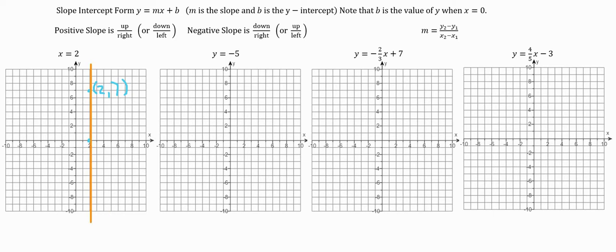And then for y equals negative 5, we go to where y is negative 5 on the y-axis, which is just down 5. It's like a y-intercept. Do note that this equation, y equals negative 5, is the same thing as writing y equals 0x minus 5.